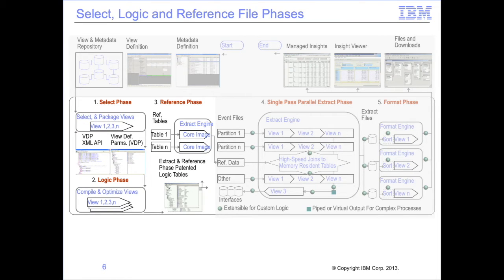The metadata and views are stored in the SAFIR view and metadata repository awaiting the start of the performance engine. The first part of the performance engine performs the select logic and reference file phases. The select phase selects views and associated metadata from the view metadata repository. Alternatively, this phase can read data provided in a SAFIR XML schema which defines the metadata and function to be performed against the data, bundling either into a VDP, the view definition parameter file.